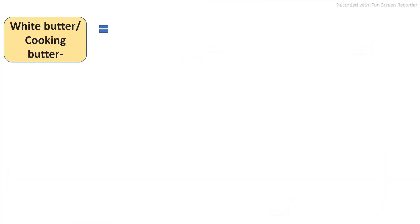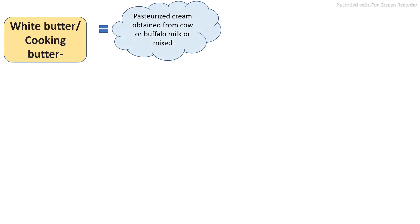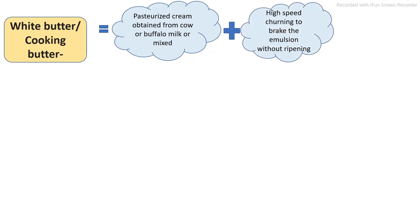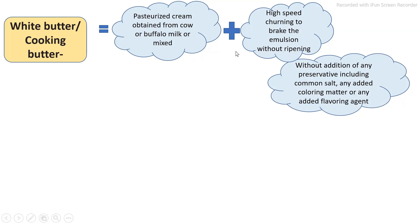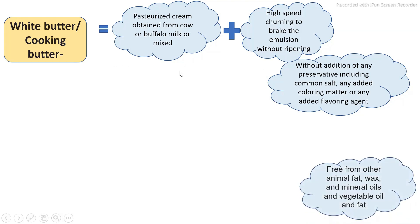The third category is white butter, also called cooking butter. It is similar to desi butter but without natural fermentation. The cream is separated from milk using a cream separator and directly churned to produce butter. This cooking butter is mostly used for the production of ghee, without addition of other ingredients.